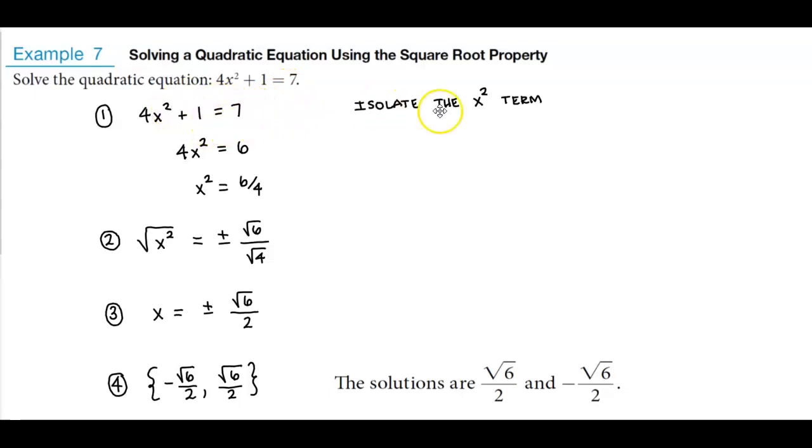Now our goal is to isolate the x term. Before we do that, we need to first subtract 1 from both sides. Subtracting 1 from both sides gives us 7 minus 1, which is 6. So now we have 4x squared, which is equal to 6.